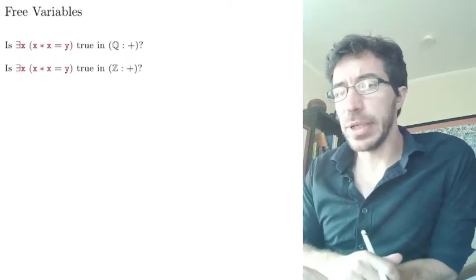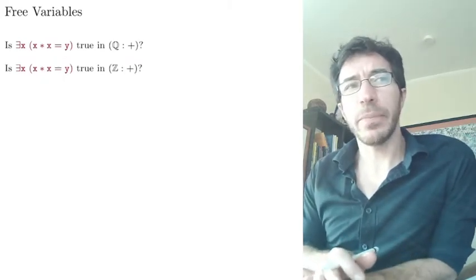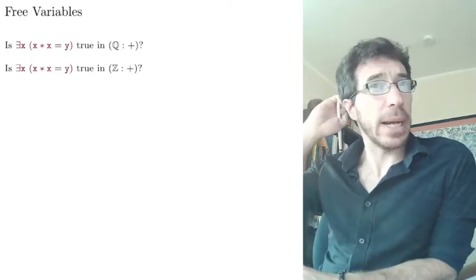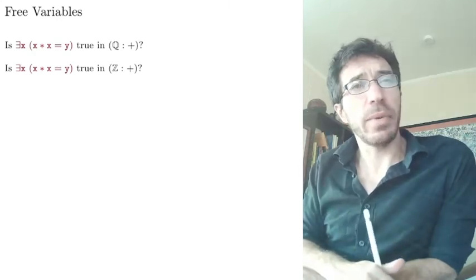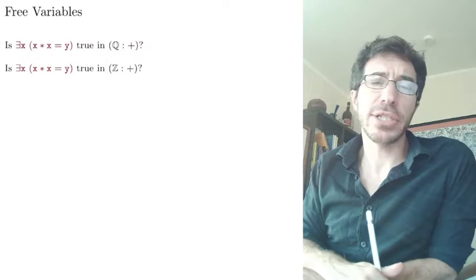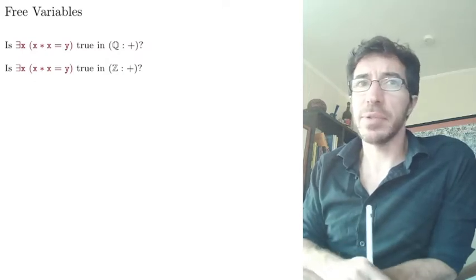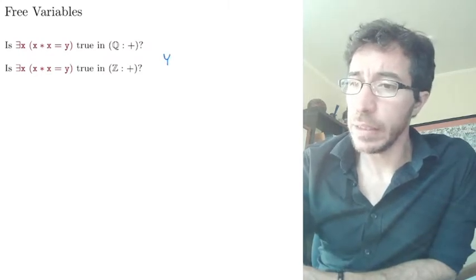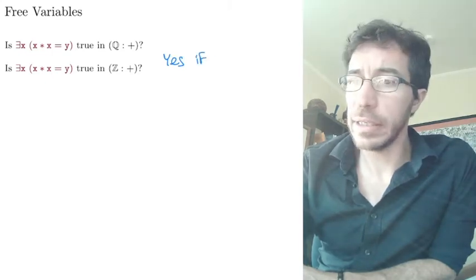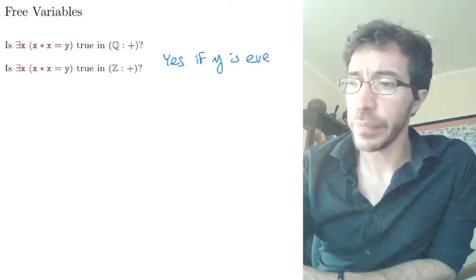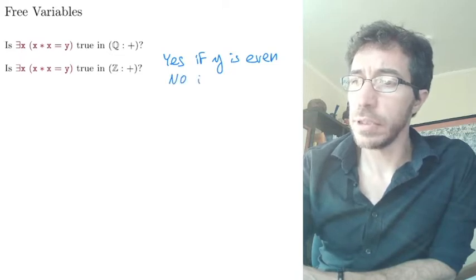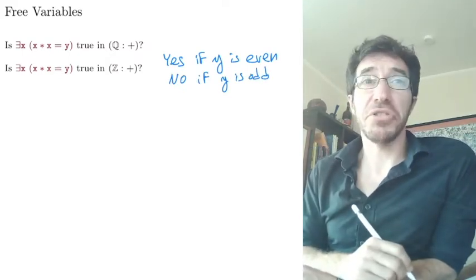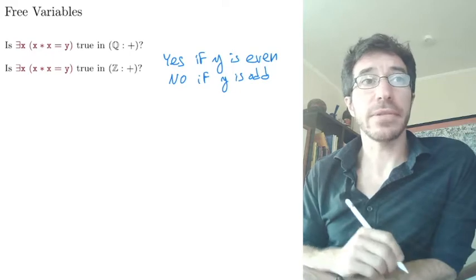Let's look at the same formula but now in the integers. Is this true? Again, x would have to be y over 2, but in the integers not every number is divisible by 2. So the answer is yes if y is even, and no if y is odd. It's not an obvious question — it depends on what y is.